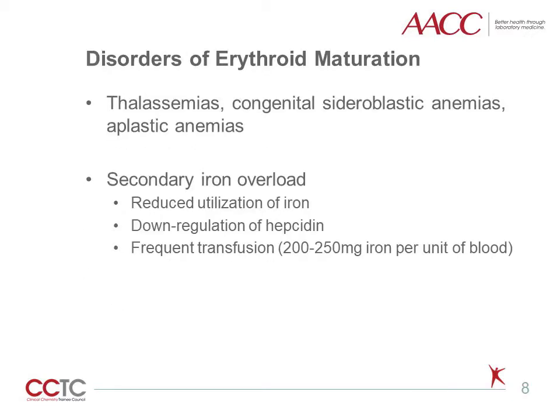In addition to hemochromatosis, which is a primary iron overload disorder, a major class of secondary iron overload is disorders of erythroid maturation. Some common diseases in this category include thalassemias, congenital sideroblastic anemias, and aplastic anemias. Iron overload in these conditions is caused by a number of factors, including reduced utilization of iron due to defective incorporation of iron into heme, downregulation of hepcidin which persists despite iron overload, and finally frequent transfusion.